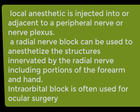Nerve block and field block anesthesia are forms of regional anesthesia. The goal of this type of anesthesia is to anesthetize an area of the body by blocking the conductivity of sensory nerves from that area. In nerve block anesthesia, a local anesthetic is injected into or adjacent to a peripheral nerve or nerve plexus. For example, a radial nerve block can be used to anesthetize the structures innervated by the radial nerve, including portions of the forearm and hand.